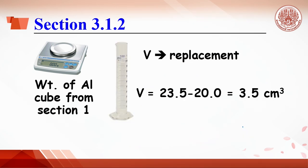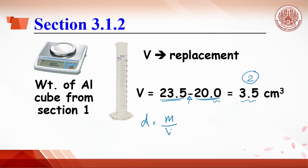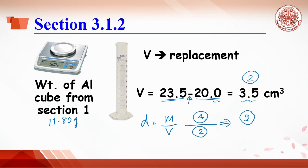When the volume of the aluminum cube is estimated from water displacement in the cylinder, for example the initial volume is 20 ml and 23 ml after adding the cube, the subtraction significant figure rule gives the lowest decimal. This yields only 2 significant figures for volume. Then density equals mass divided by volume: 11.80 grams (4 significant figures) divided by 2 significant figures means the answer should have only 2 significant figures.